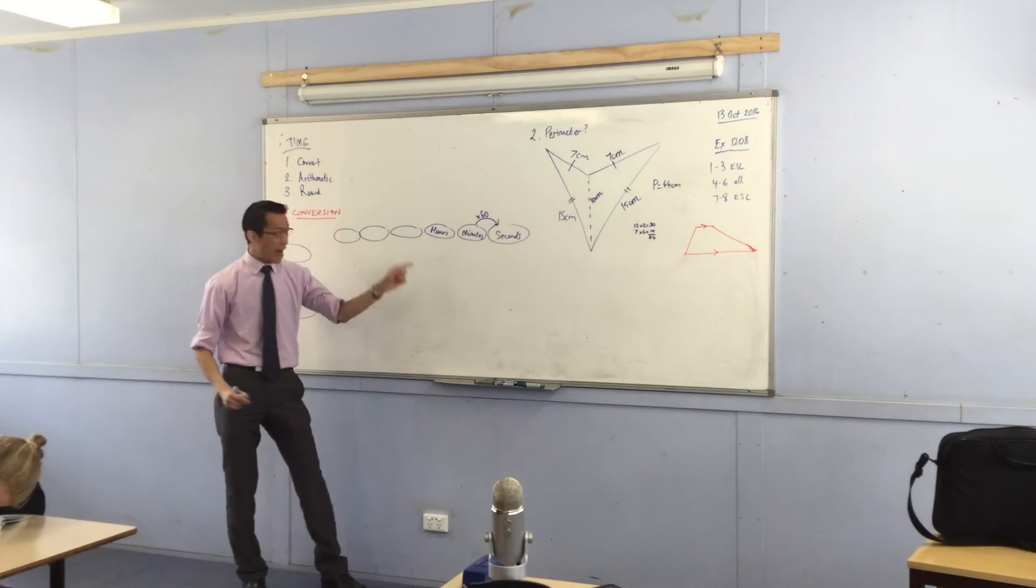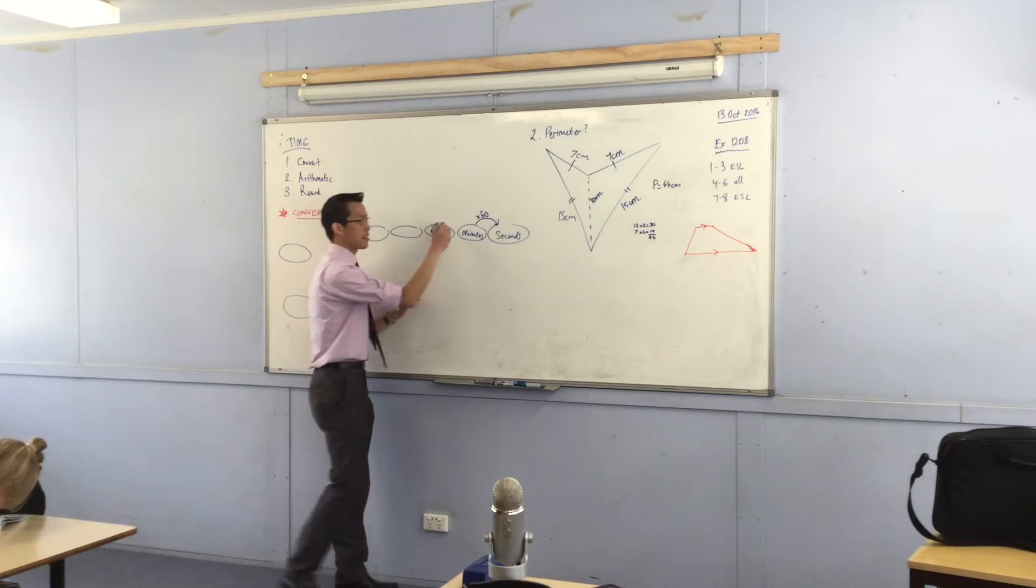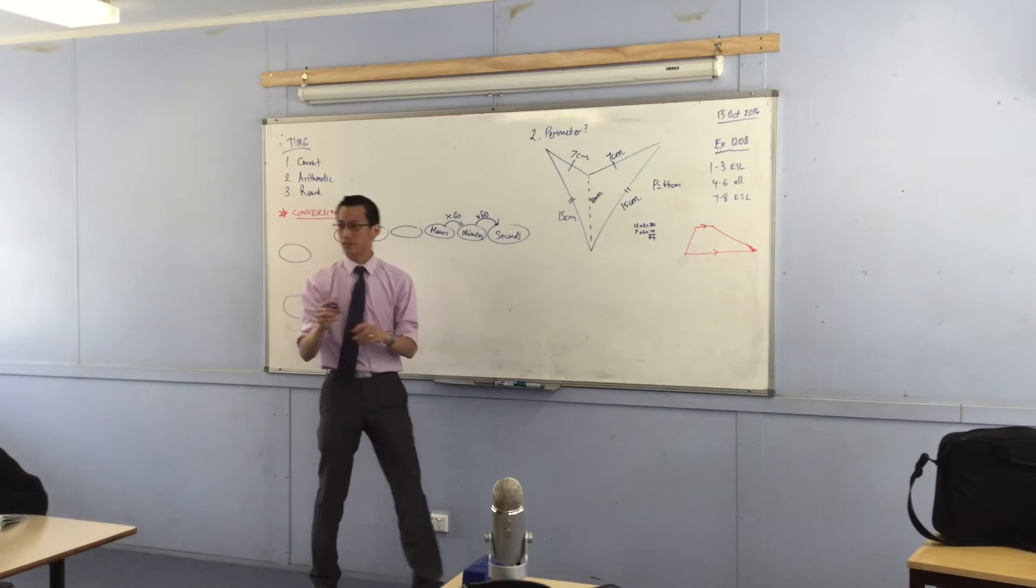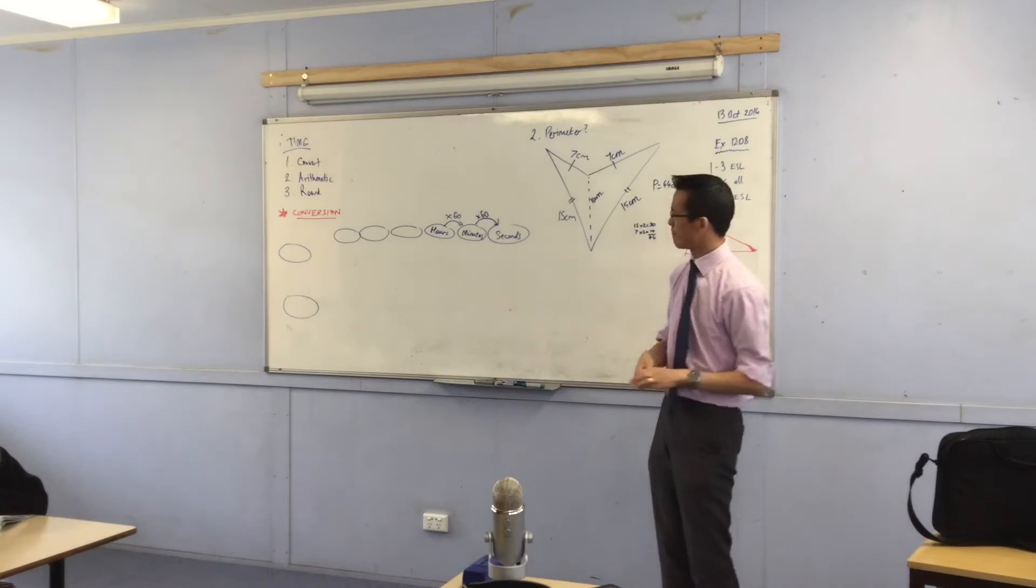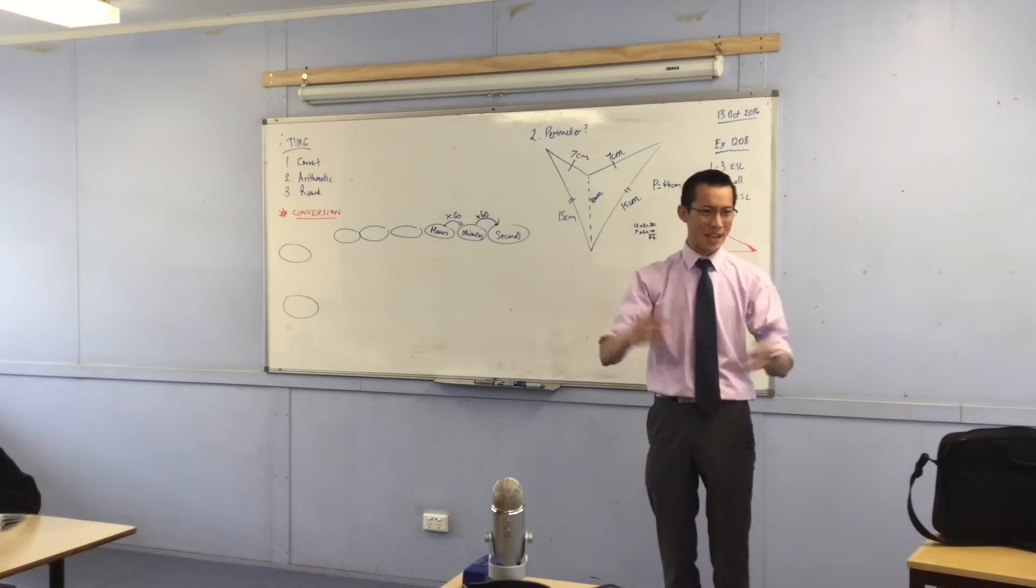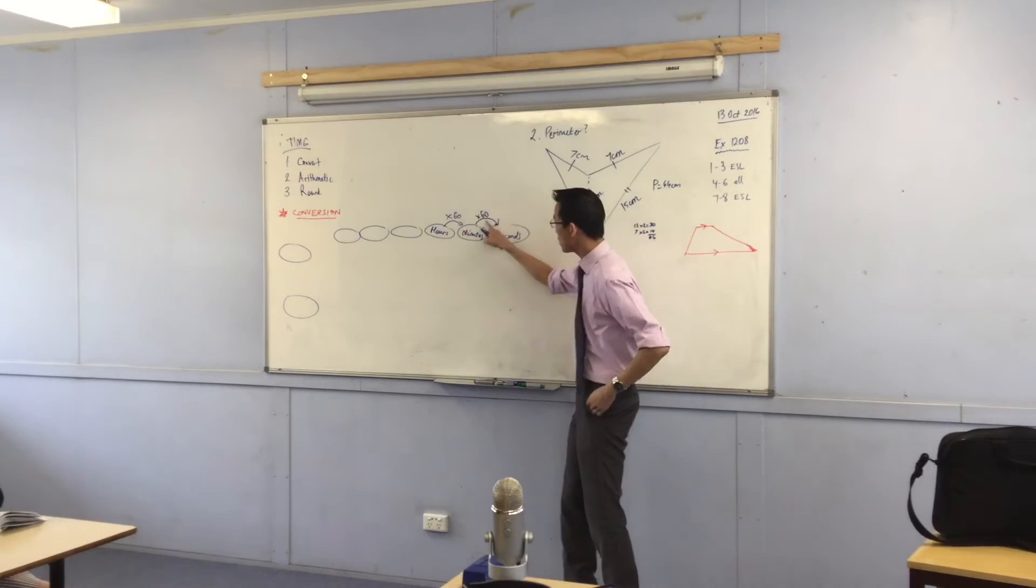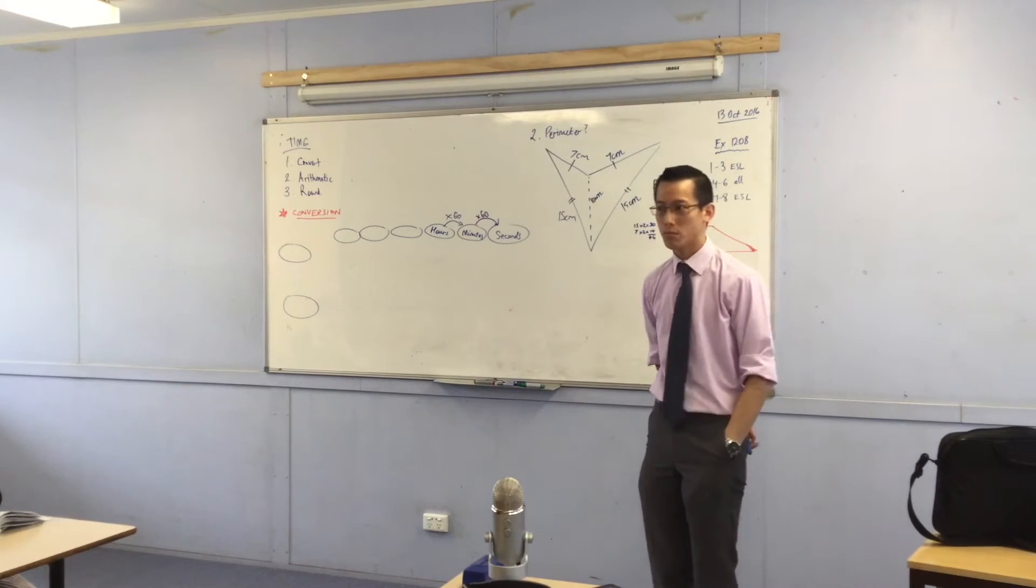From hours to minutes, again, what's the multiplication? Times by 60. Now, just a quick question before I get to your question, Akil. 60, the metric system which we already established how awesome it is, it's all about tens, right? So why do you think they picked 60 for time? Why do we pick 60?